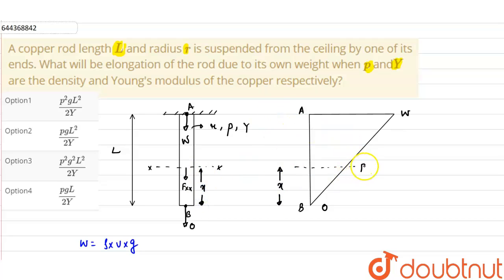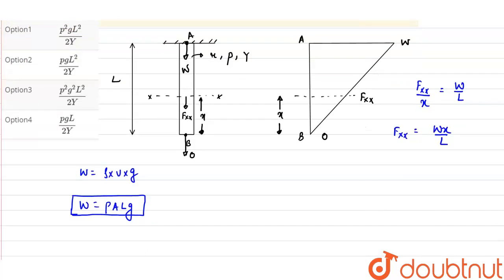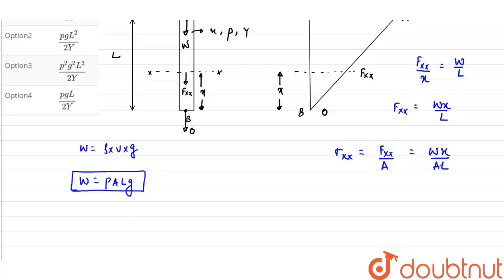will be Fxx. From the similar triangle we can find Fxx, so Fxx upon the distance x will be equals to W upon L. So the load acting at this cross section will be Wx upon L. As we know the load, we can find the stress in this cross section. It will be equals to Fx upon area, so this will be Wx upon AL. Now we know the stress developed in this cross section at a distance of x.